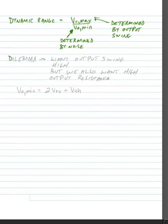Okay, so we do have a dilemma though, because we'd like our output swing high, but we also want high output resistance. So we saw one way to make our output resistance high was to use that cascode that we just looked at, but it conflicts with this output swing being high requirement that we'd like to see.